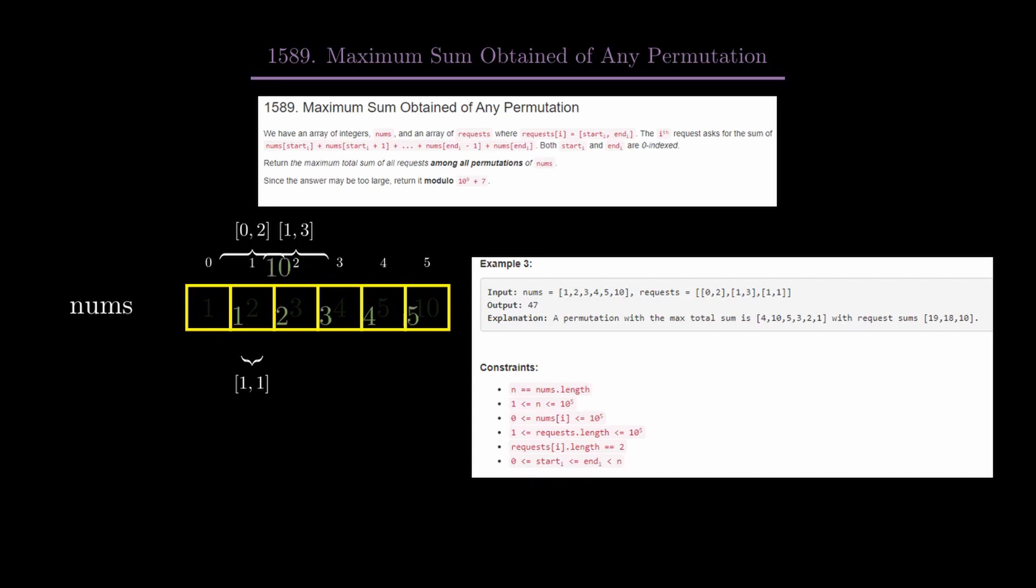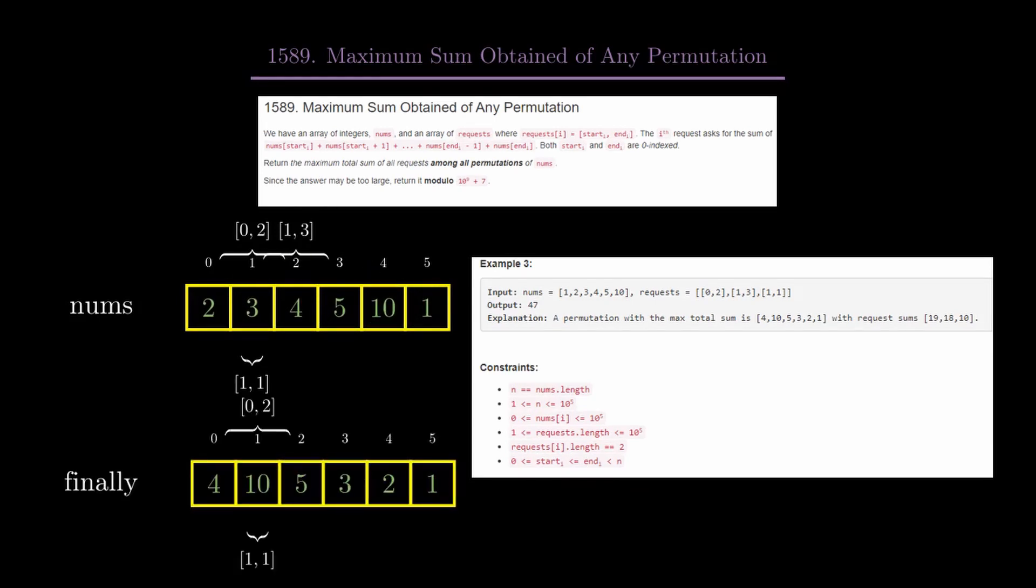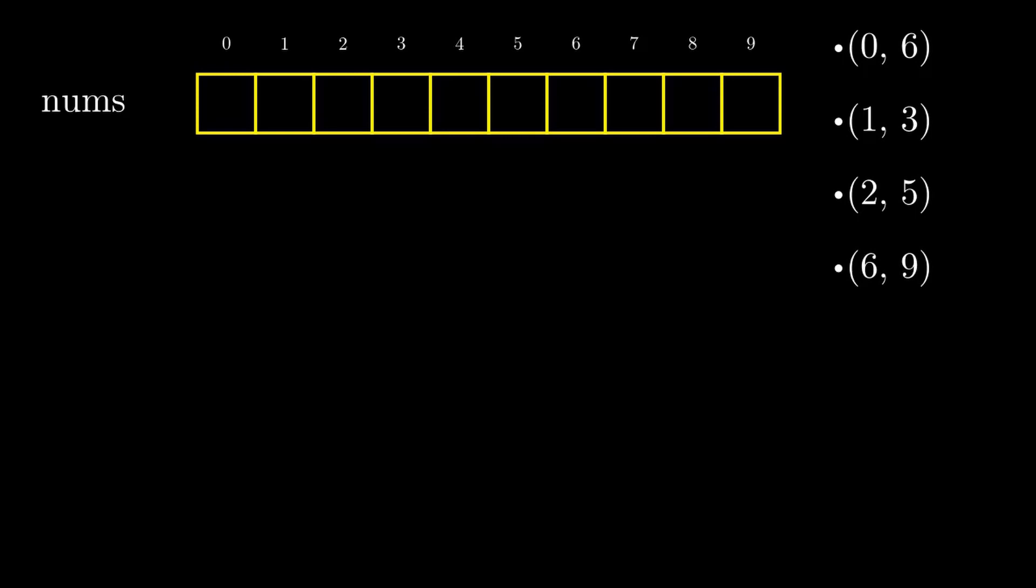But we want the answer across all permutations of nums. One such permutation is [4, 10, 5, 3, 2, 1]. If you try computing the expression, you will get the answer as 47.